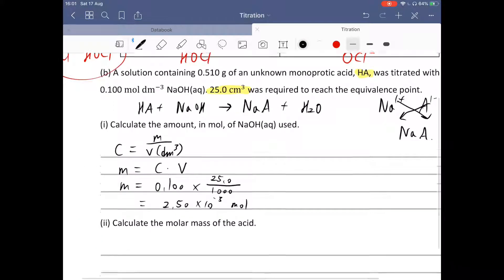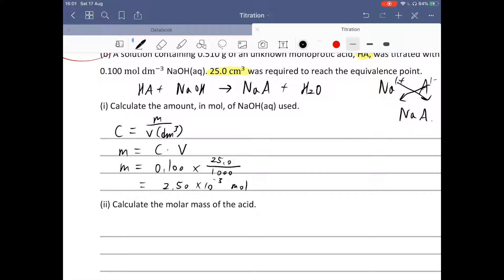Part 2, calculate the molar mass of acid. From the chemical equation, we know the mole ratio between the acid and sodium hydroxide is 1 to 1. So that means the acid, the mole is also 2.50 times 10 to the power of negative 3 mole.